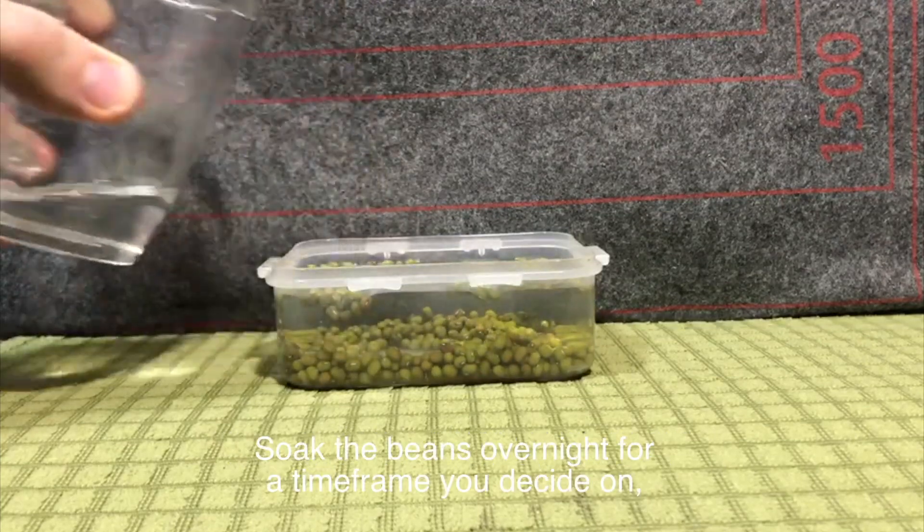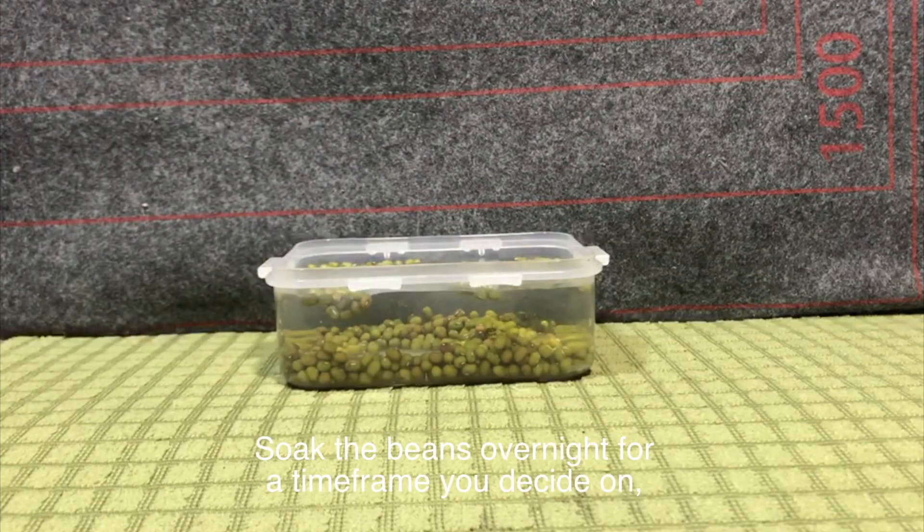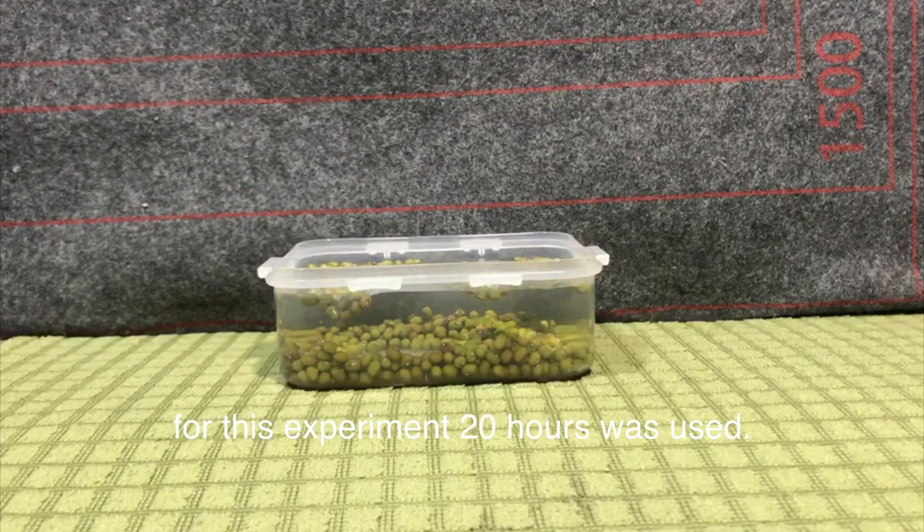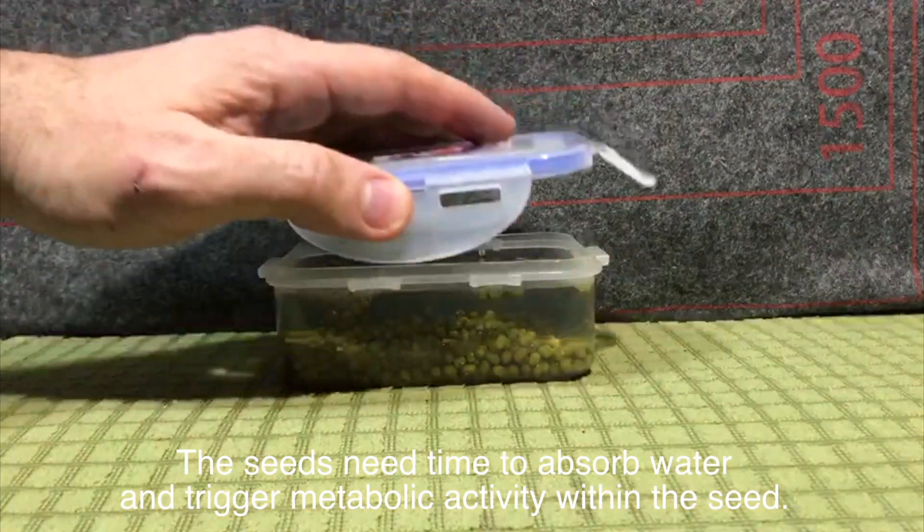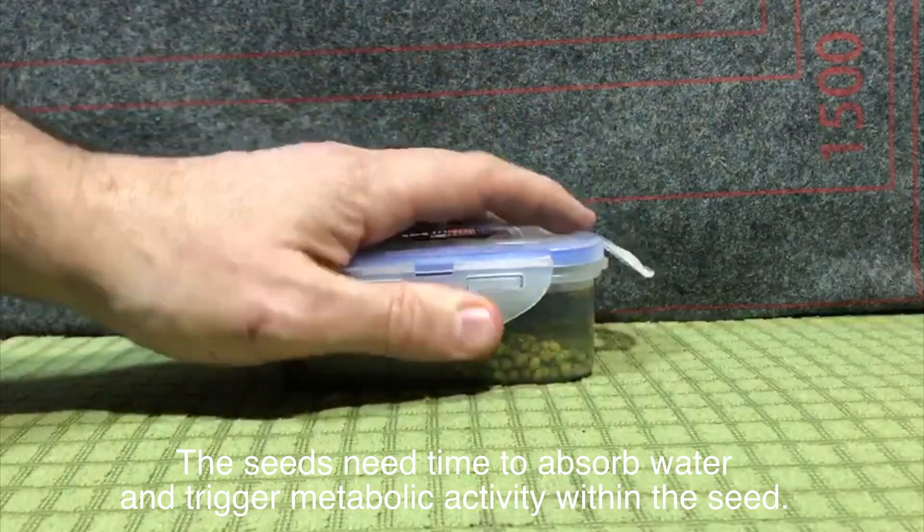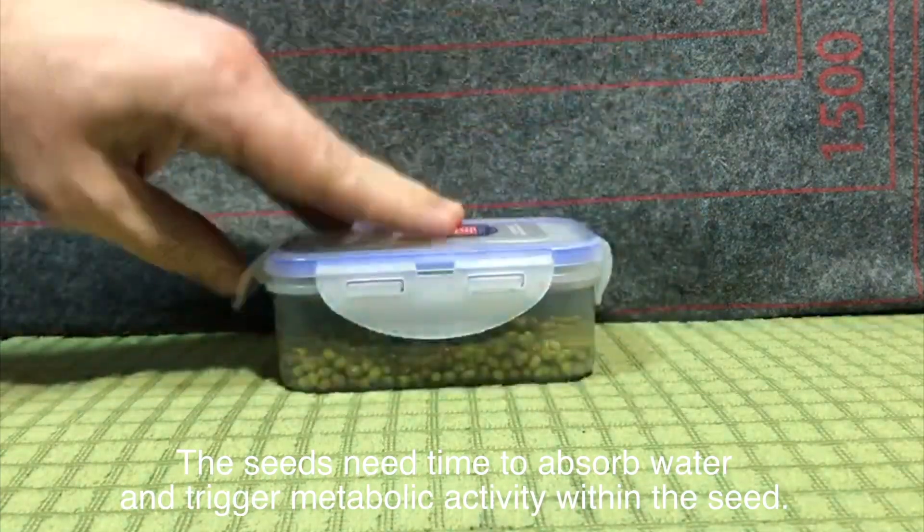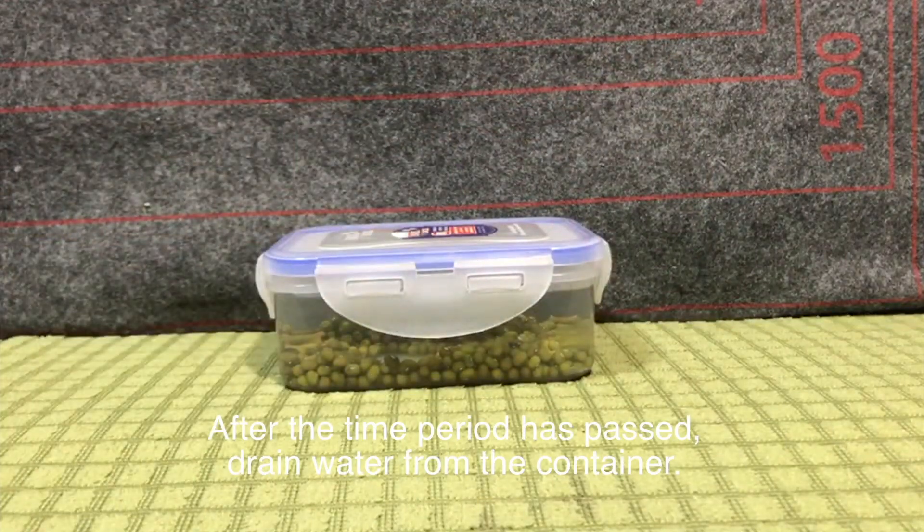Soak the beans overnight for a time frame you decide on. For this experiment, 20 hours was used. The seeds need time to absorb water and trigger metabolic activity within the seed. After the time period is passed, drain all the water from the container.